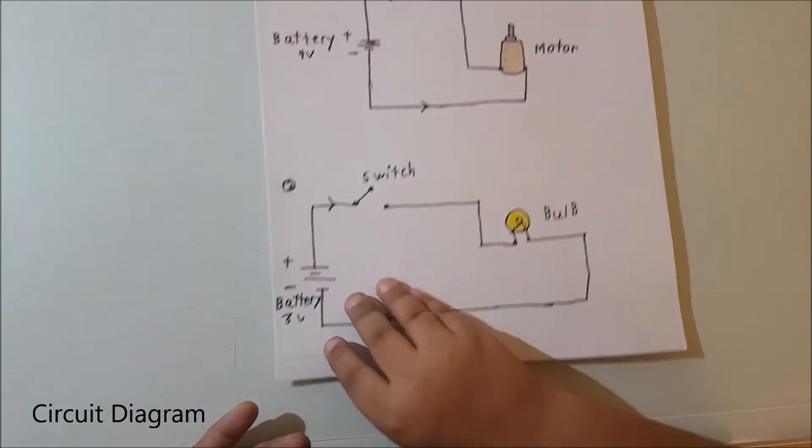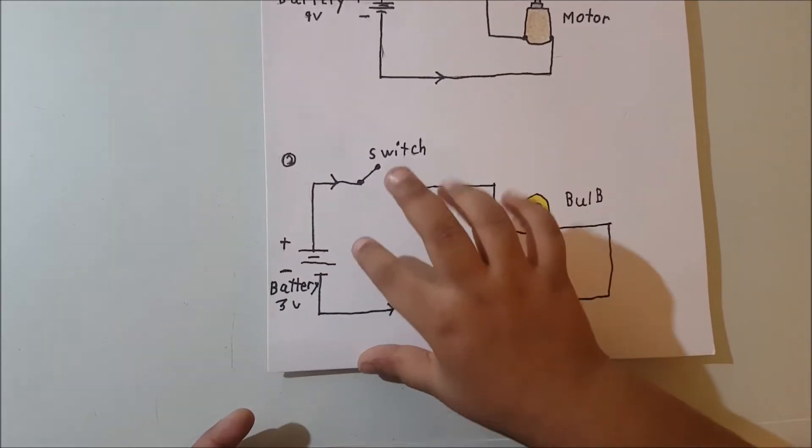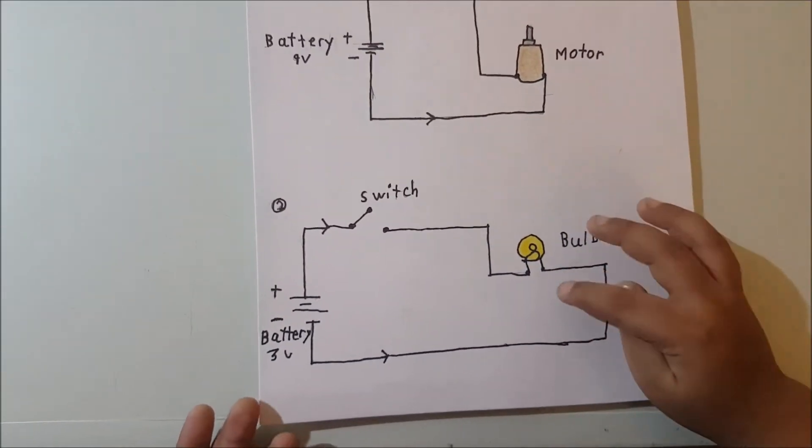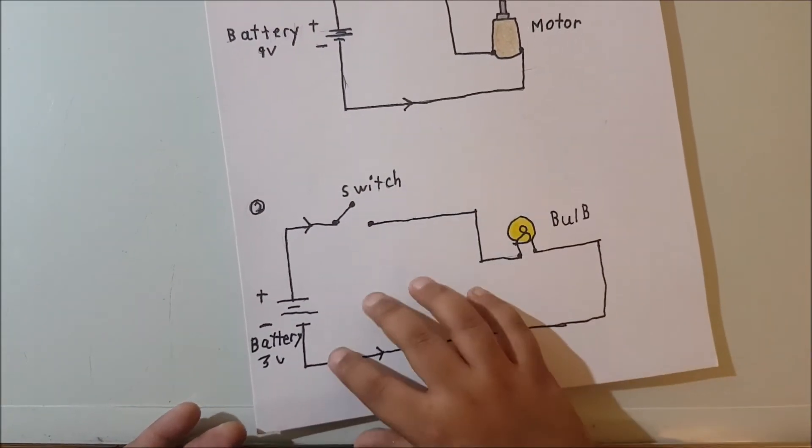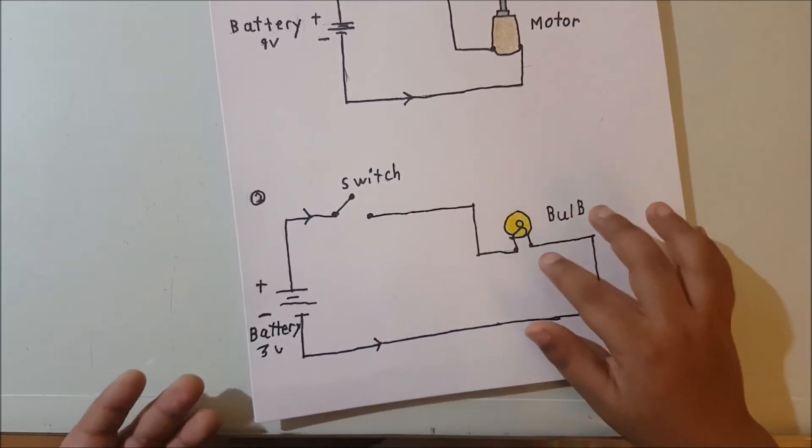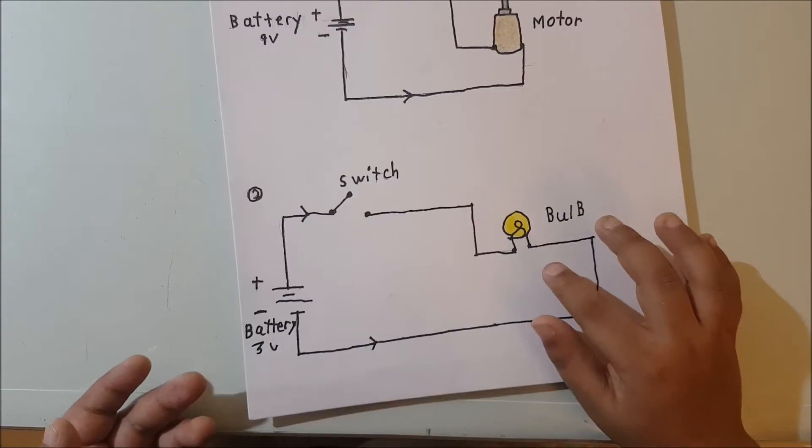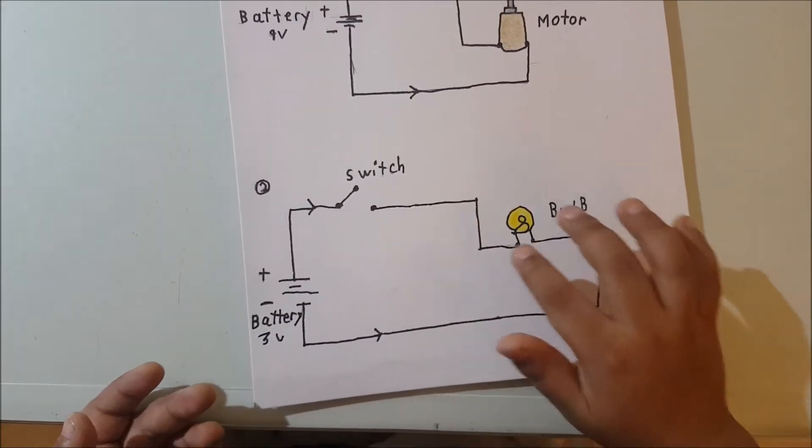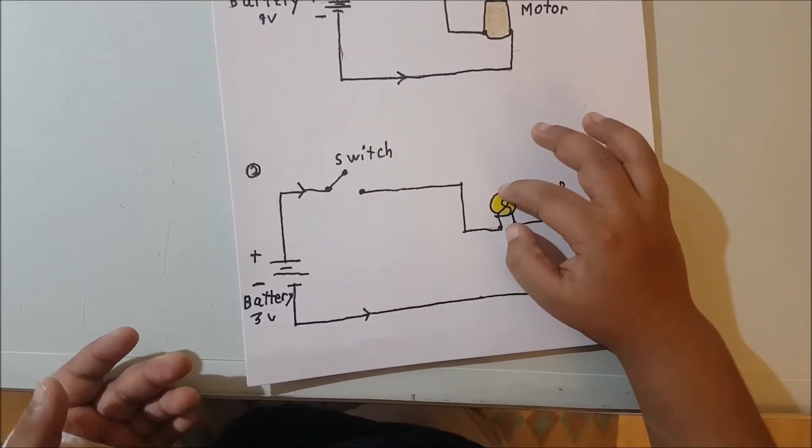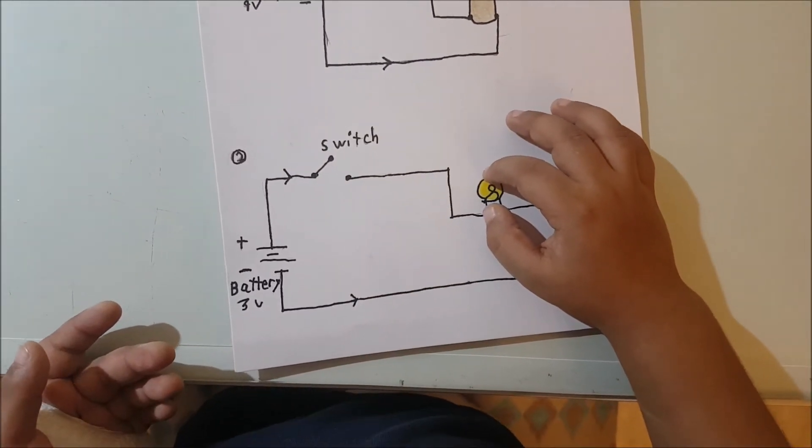Again, we have a 3 volt battery, then attached to the switch and then to bulb, and the other side of the battery goes straight into bulb. When the switch is turned on, the bulb turns on.